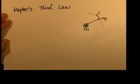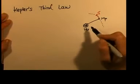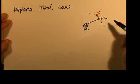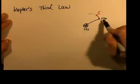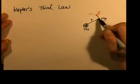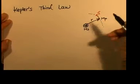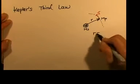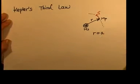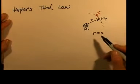Now let's look at Kepler's third law: the square of the orbital period of any planet is proportional to the cube of the semi-major axis of the elliptical orbit. Imagine this is planet mass mp, this is the mass of the sun, and this is the radius. If the orbit is elliptical, we can replace r by the semi-major axis a. I'm going to prove this using a circular orbit.